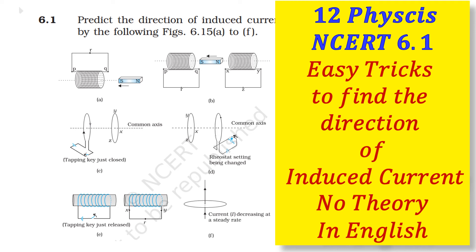In this video, we are going to see easy ways to find the direction of the induced current for the following cases. No matter what — whether the current is increased or decreased, or magnetic flux increased or decreased, or what pole is produced — without doing all this, we can find out the induced current in the secondary coil.